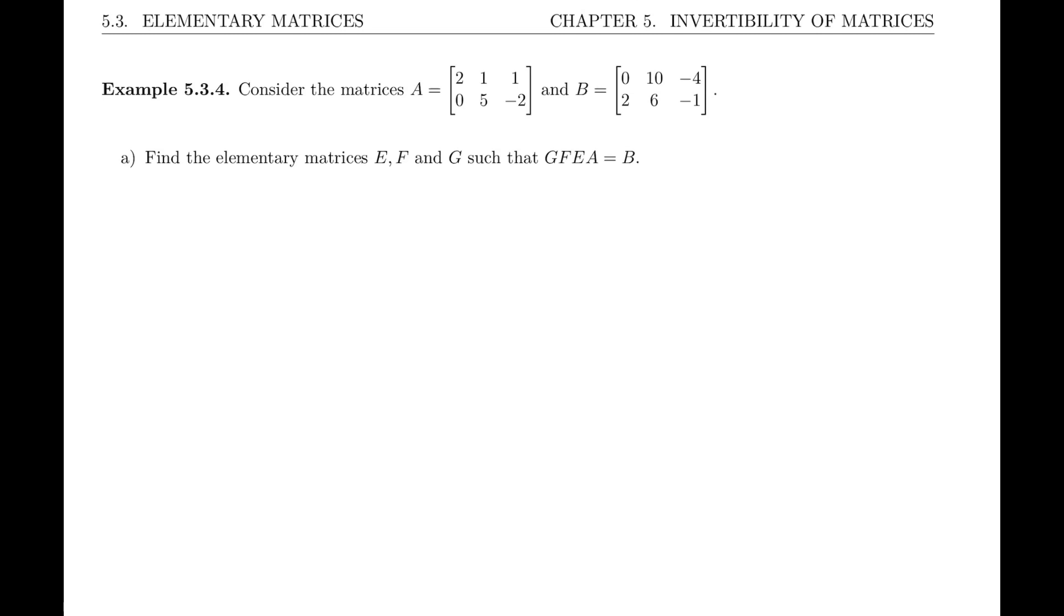And we're asked to find the elementary matrices E, F, and G such that G times F times E times A equals B. You'll recognize the same approach as what we've been doing in the last video, except here we're calling the matrices E, F, and G rather than E1, E2, E3, simply because we know there's only three of them, so we don't need to bother using subscripts.